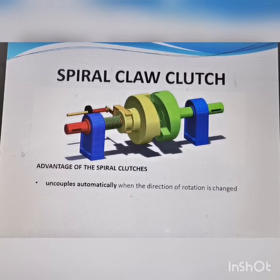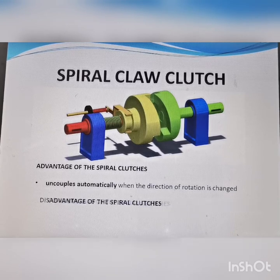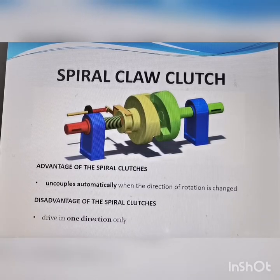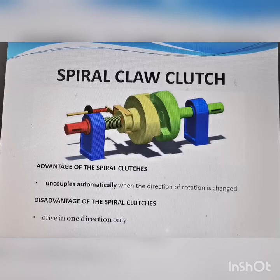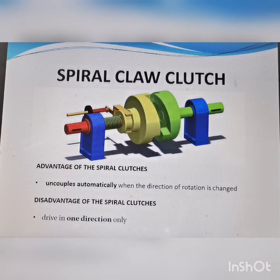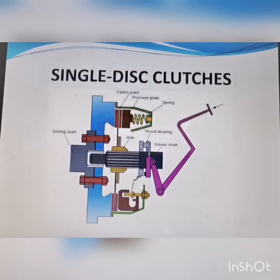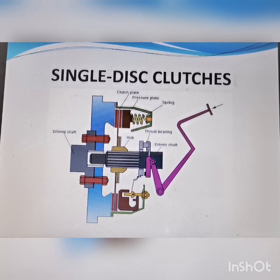The advantage of the spiral claw clutch is that it uncouples automatically when the direction of rotation is changed — it only drives in one direction. The key difference between the two positive clutches: the square claw clutch drives in both directions, while the spiral claw clutch drives in one direction only.